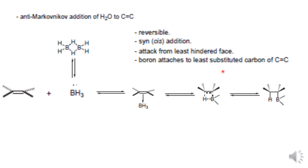Attack happens from the least hindered side, and boron attaches to the least substituted carbon. When boron attaches, that step follows Markovnikov's rule, but the overall product is anti-Markovnikov. So the first step of boronation is a Markovnikov step, but the overall addition — after water — is anti-Markovnikov.